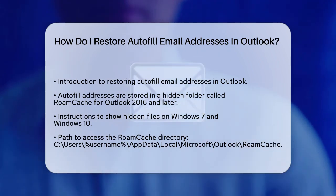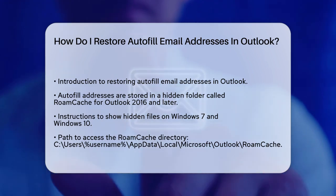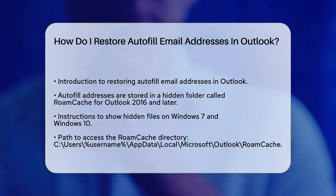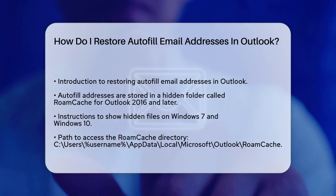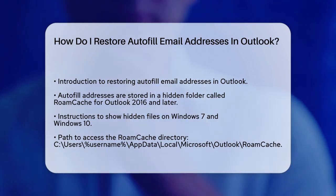To access this folder, you need to show hidden files and folders on your computer. For Windows 7, go to My Computer, then the Tools tab, select Folder Options, and in the View tab, check the box that says Show Hidden Files, Folders, and Drives.